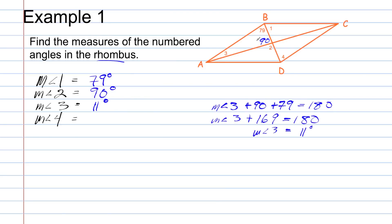I was able to determine that because this angle is 90 degrees, formed by the diagonals of a rhombus. For the measure of angle 4, if we see segment BD as the diagonal to line segment AB and line segment DC, then the 79-degree mark is an alternate interior angle to angle 4. The measure of angle 4 and the one marked 79 degrees are alternate interior angles, therefore they are congruent.